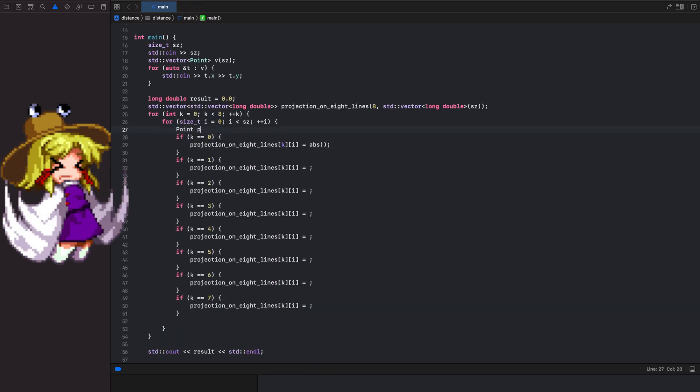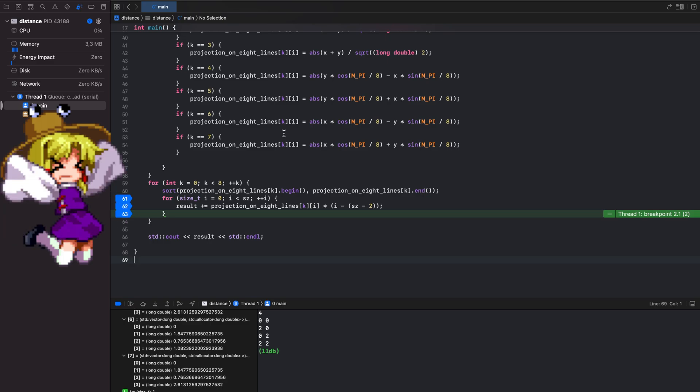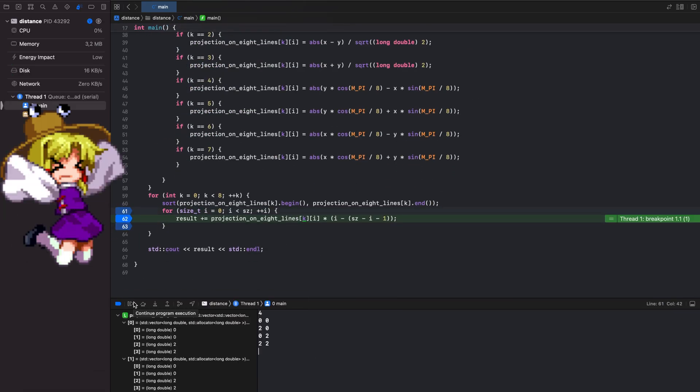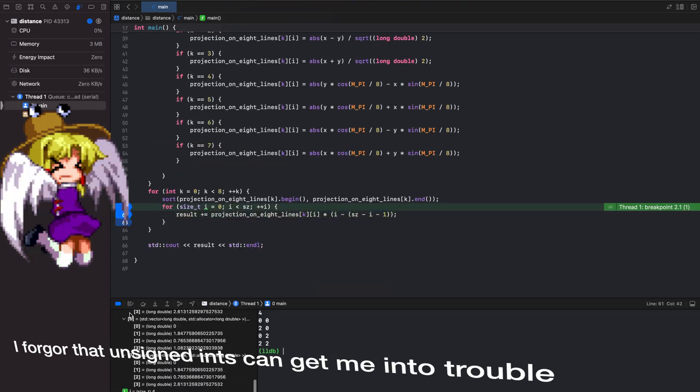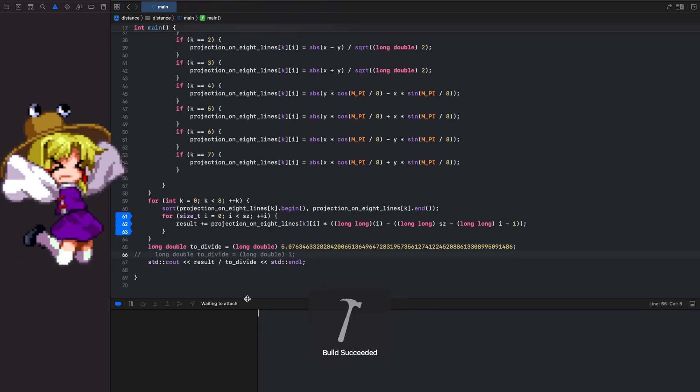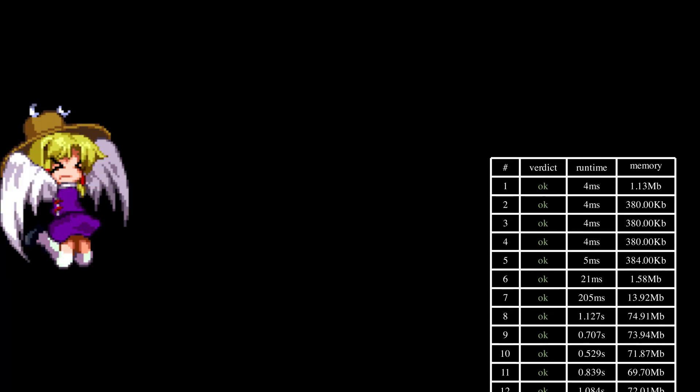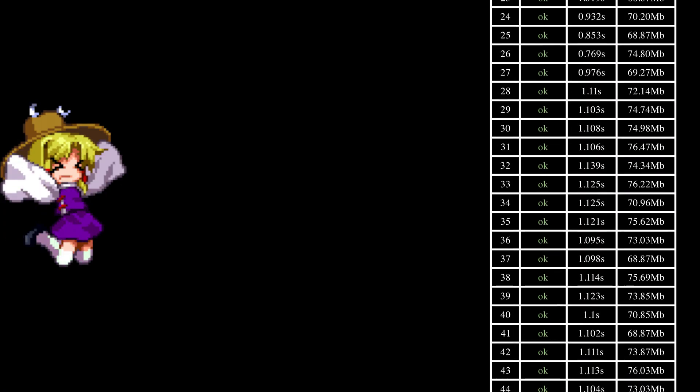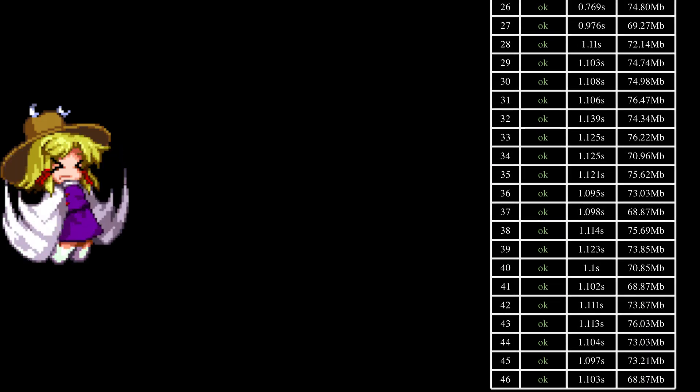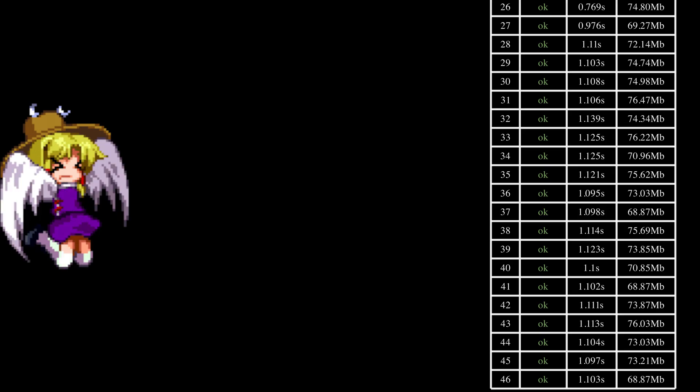Well, it's time to implement the solution. It doesn't depend on randomness in any way, so we are sure of it. The final complexity of the solution is O(m·n log n), where m is the number of lines on which we project. That is, in our case, 8. Expect a positive result. Such an interesting problem was at the qualifying stage of the ICPC. Kudos to the author of the problem, Maxim Ahmadov, and thanks for watching!